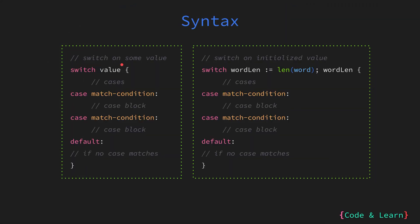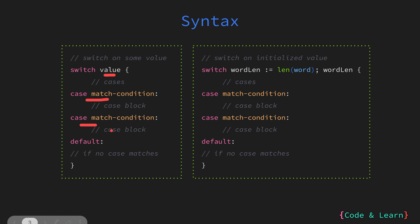Here we have two syntaxes of switch case. In the first one, we are switching on a value and then we have some conditions for cases. If this value matches the first condition, this case block will be executed. If this value matches this condition, the second case block will be executed. If there are no case matches for this value, then the default case block is executed.